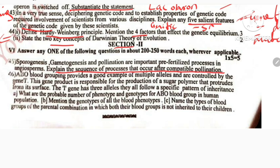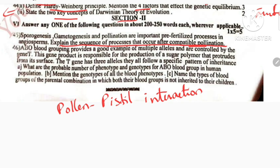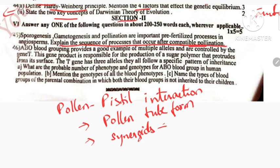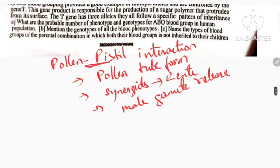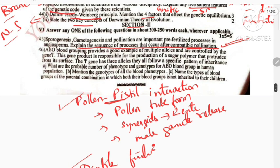Explain the sequence of processes that occur after compatible pollination. Pollination is pollen-pistil interaction topic. After compatible pollen, first is pollen tube formation. Next, pollen tube enters through synergids and releases male gametes. This is pollen-pistil interaction. Next is double fertilization. Explaining these topics will get full marks.